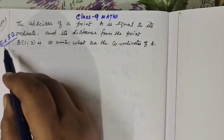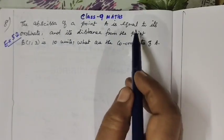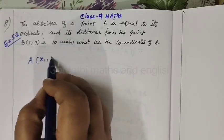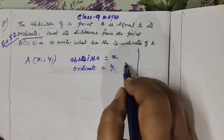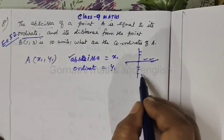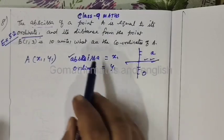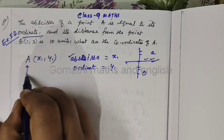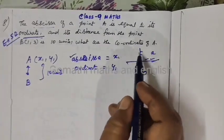For class 11 exercise 5.2 question number 8. The abscissa of a point A is equal to its ordinate. Point A is x1, y1. The abscissa of a coordinate is equal to its x value. Point B is at a distance of 10 units. What are the coordinates?